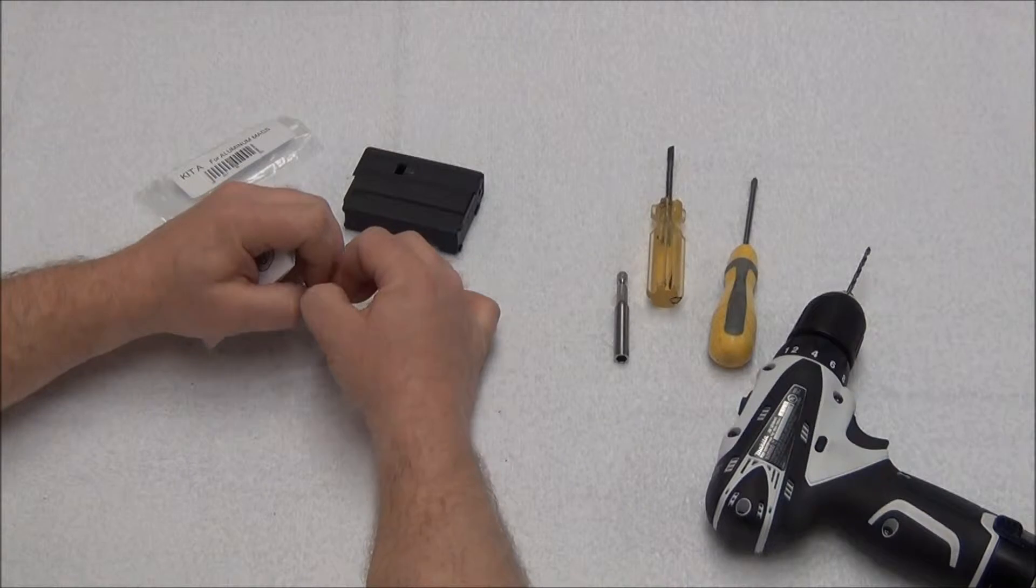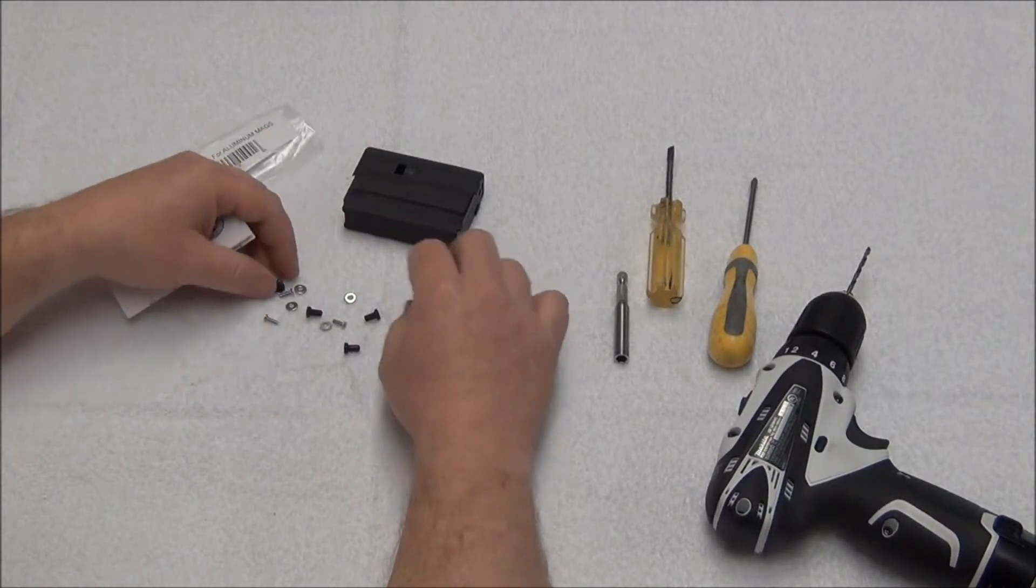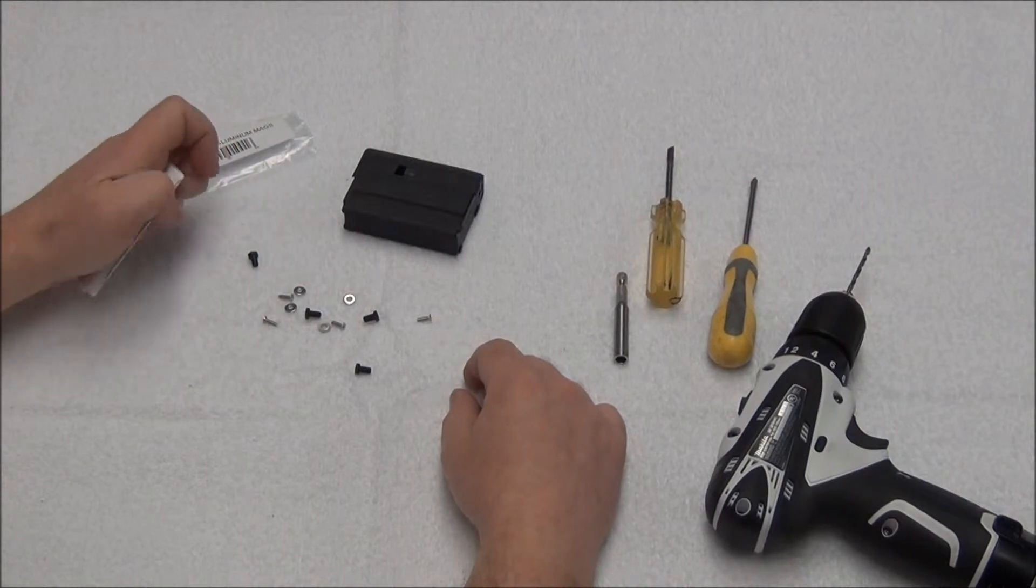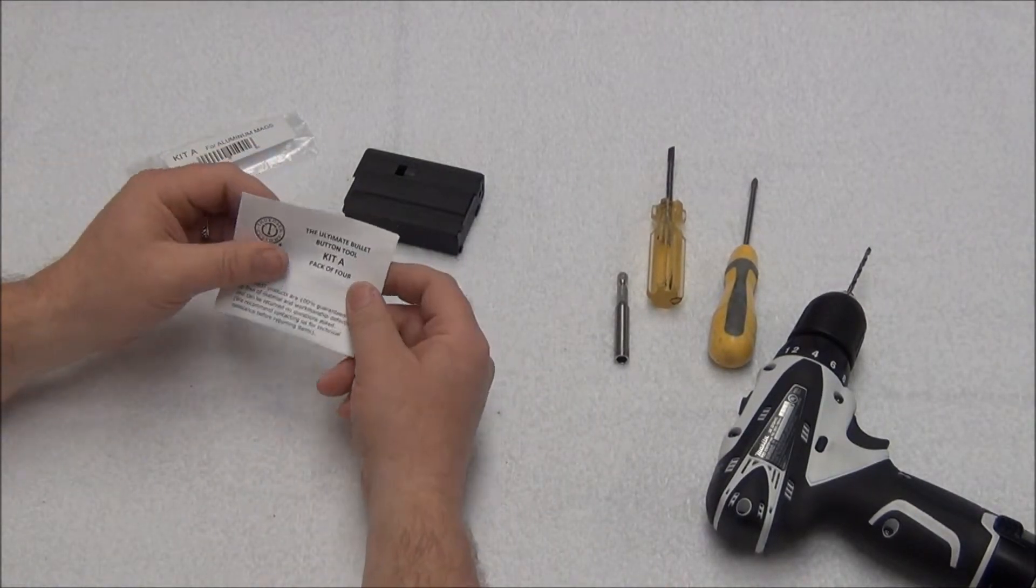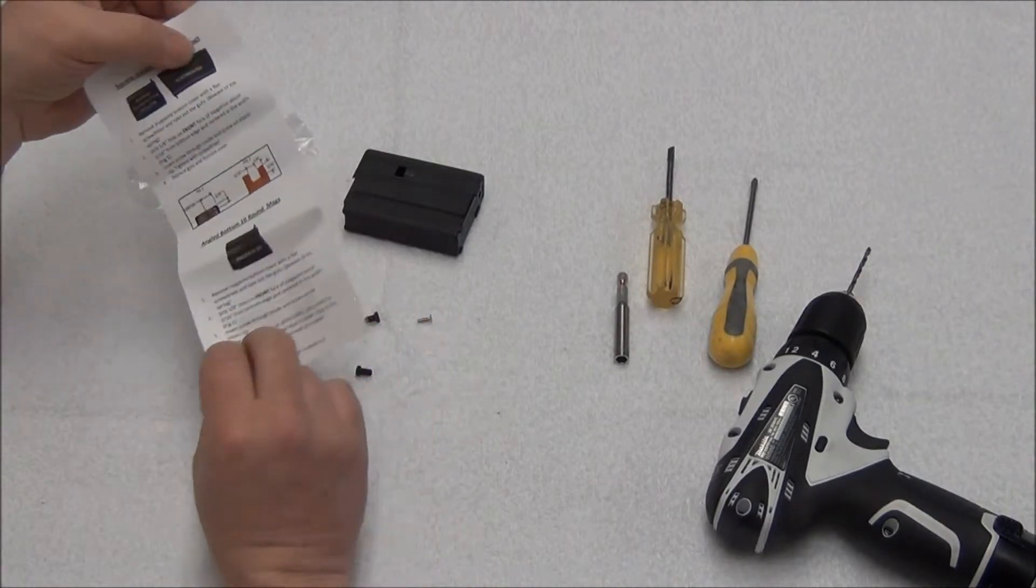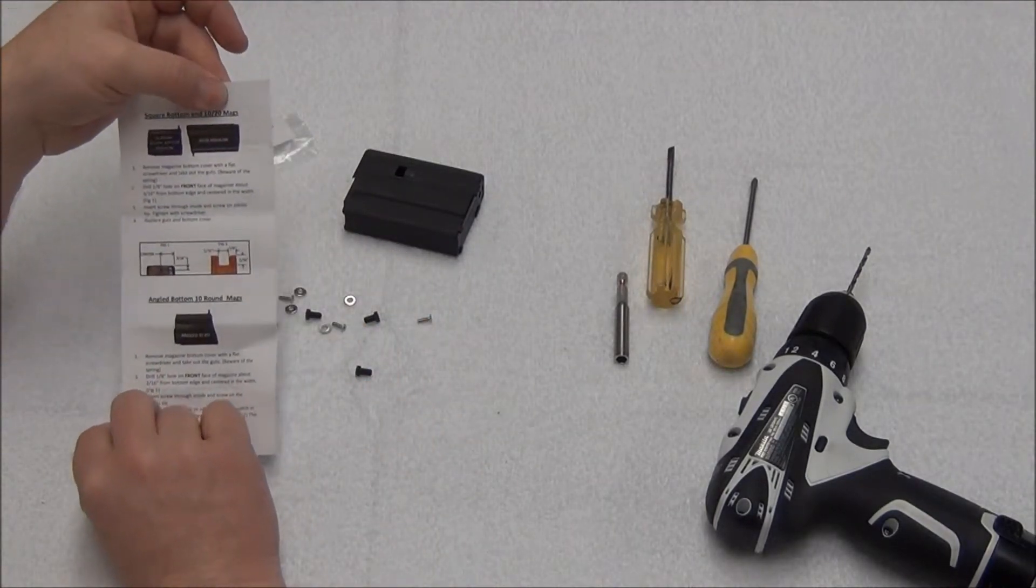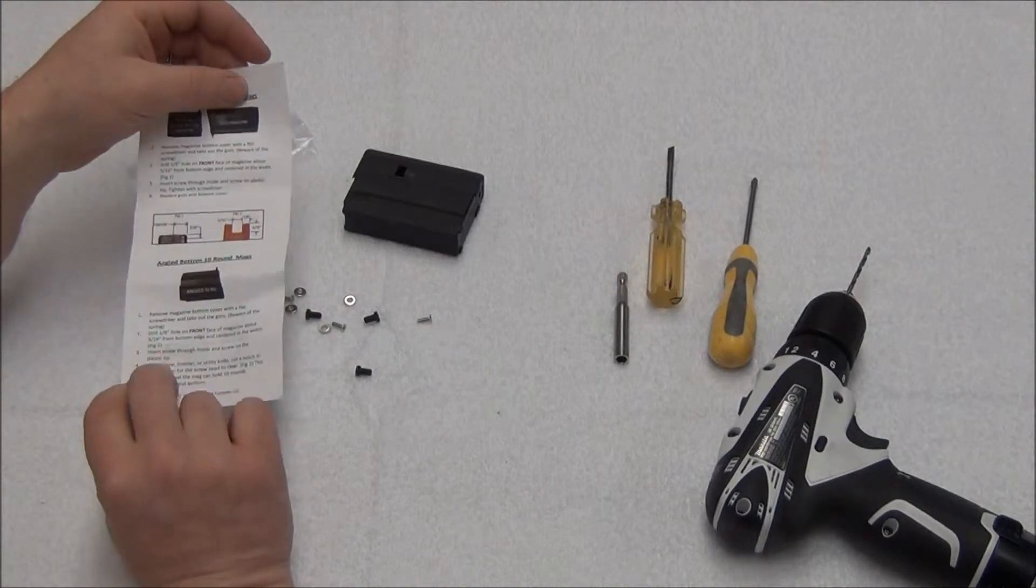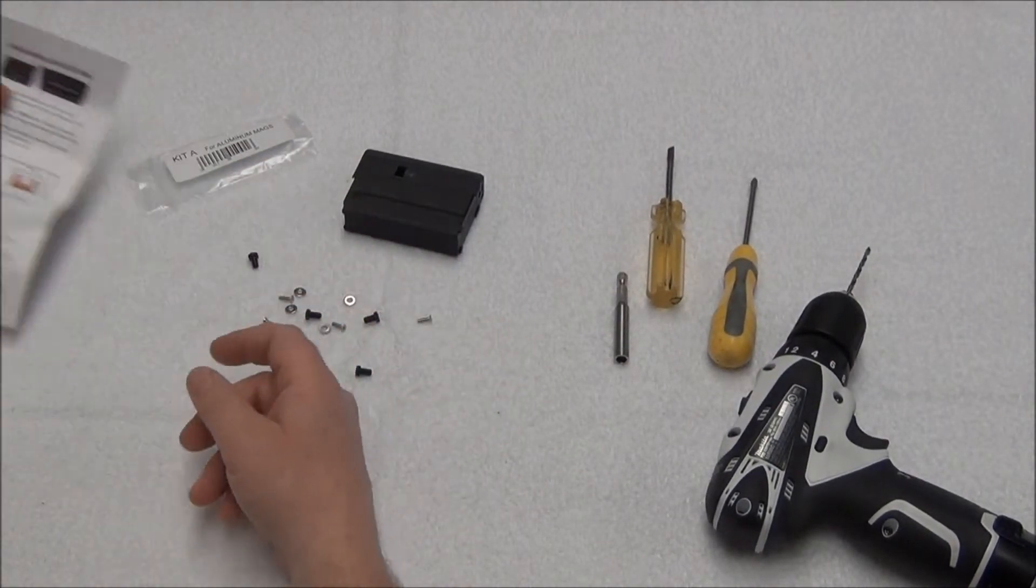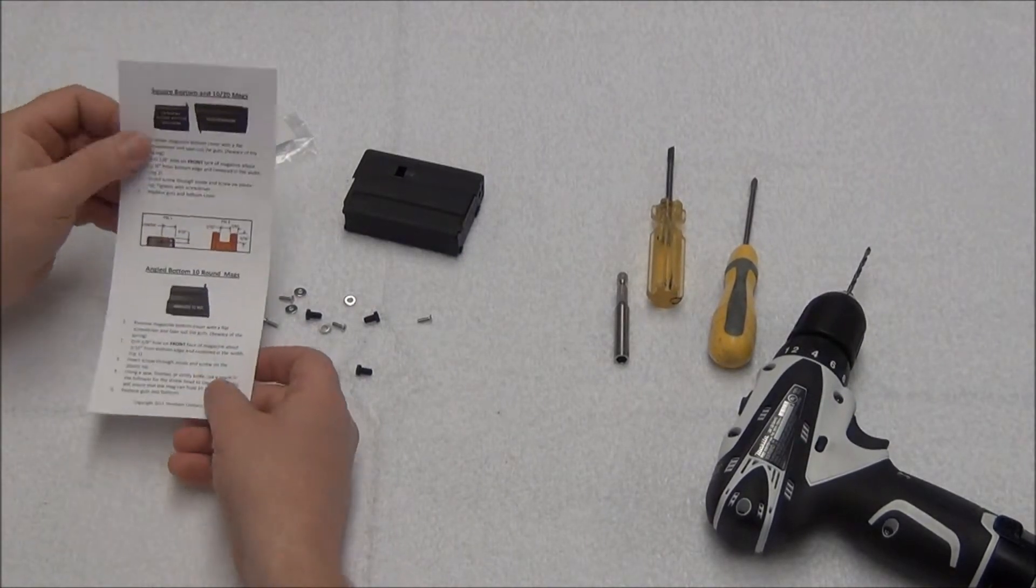The washers are for installing on magpulls, so you wouldn't use the washers for the installation on a magazine. Every one of our kits comes with full color instructions. It tells you what to do, very simple to read. The tools that you need are also very simple.